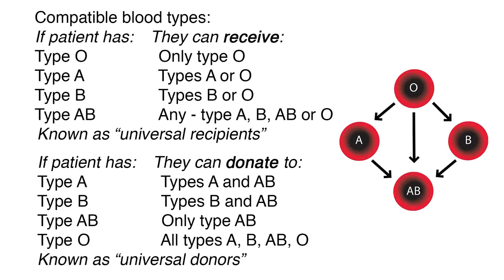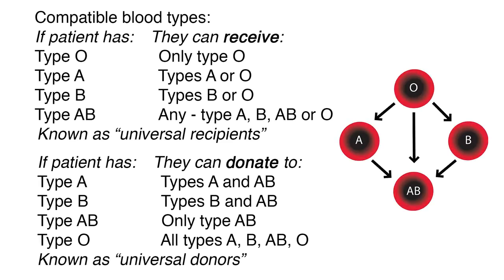The following is a list of compatible blood types. If a patient has type O blood, they can receive only type O. If the patient has type A, they can receive types A or O. If they have type B, they can receive type B or O. If the patient has type AB blood, they can receive any type — A, B, AB, or O — and they are known as the universal recipient.